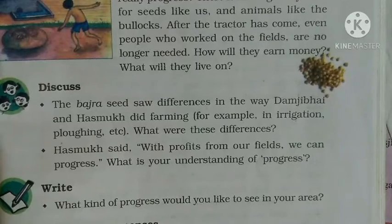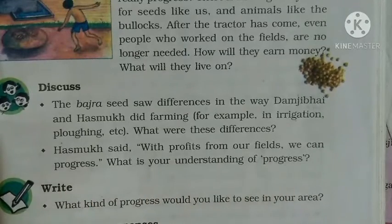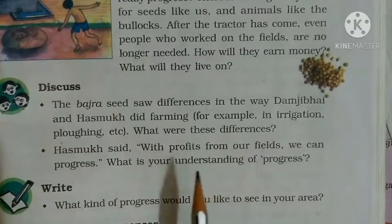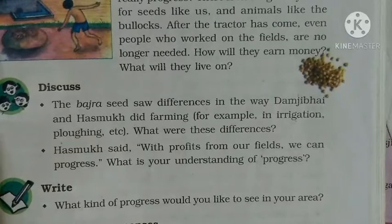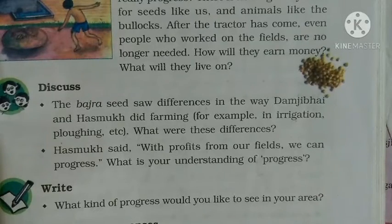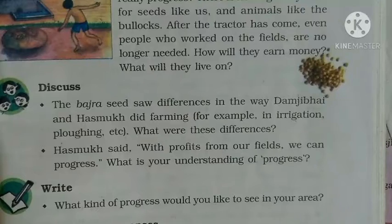What is your understanding of progress? Hasmuk ka kehna tha ki field se jo profit hota hai, us se hum progress karte hain. Progress means a better lifestyle — people get better schooling, houses have all modern gadgets like fridge, cooler, washing machine, and gas. They get more nutritious food to eat and better personal transport. Progress ka matlab ek achhi lifestyle aur achha future hai.